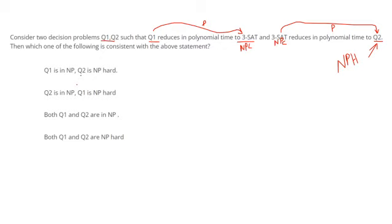So the most appropriate answer is: Q2 is NP-hard, and Q1 is in NP — as hard as an NP-complete problem. We cannot say Q1 is NP-hard just by the rules, and we can't assume Q2 is NP-hard without proper justification either. The safest and most consistent statement is that Q2 is NP-hard and Q1 is in NP. That's all for today — good luck, and thank you for watching.